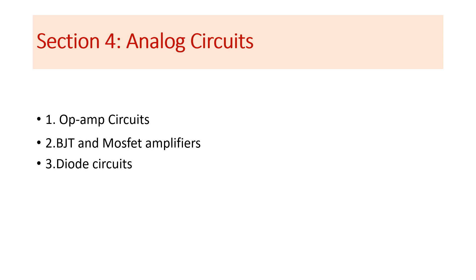Section four is Analog Circuits, which is an extension of section three. In this section we have three subjects: Op-Amp Circuits, BJT and MOSFET Amplifiers, and Diode Circuits. Each of these contains multiple concepts, and I will include those concepts in my PDF as well.